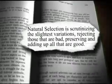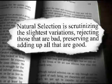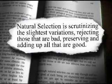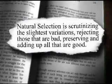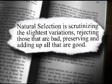As Darwin stated, it is not necessary to suppose that the modifications are all simultaneous if they were extremely slight and gradual. Natural selection is scrutinizing the slightest variations, rejecting those that are bad, preserving and adding up all that are good.